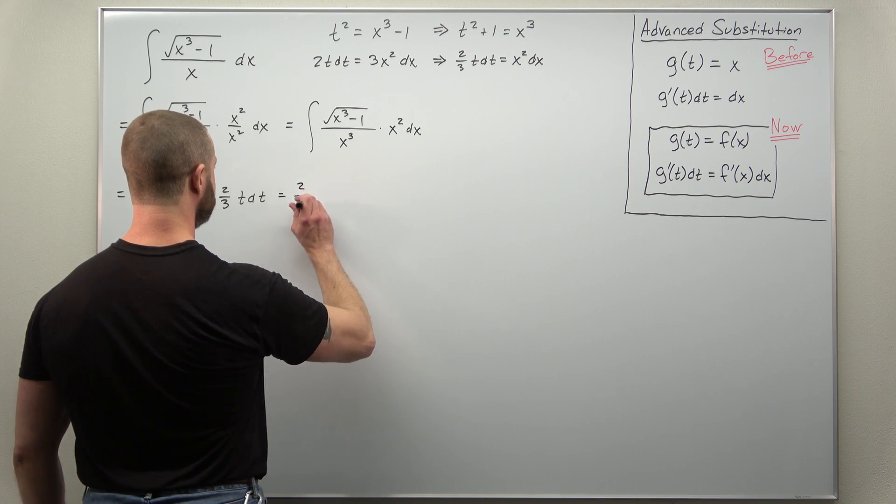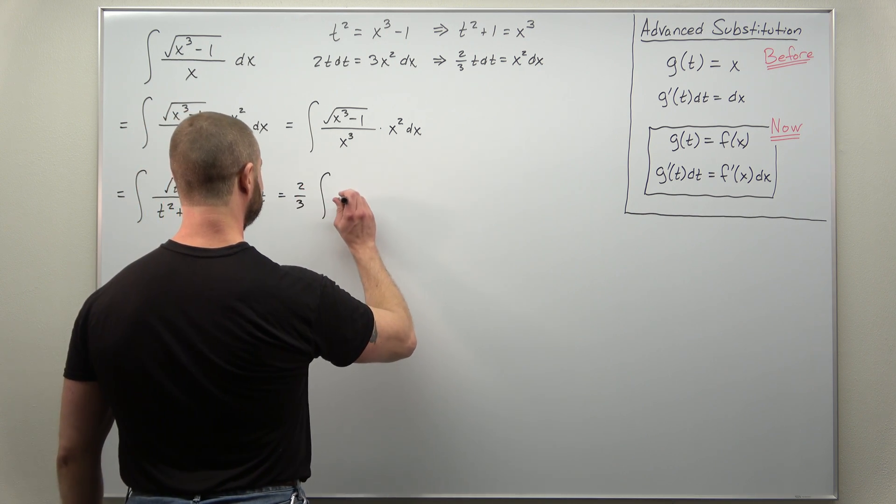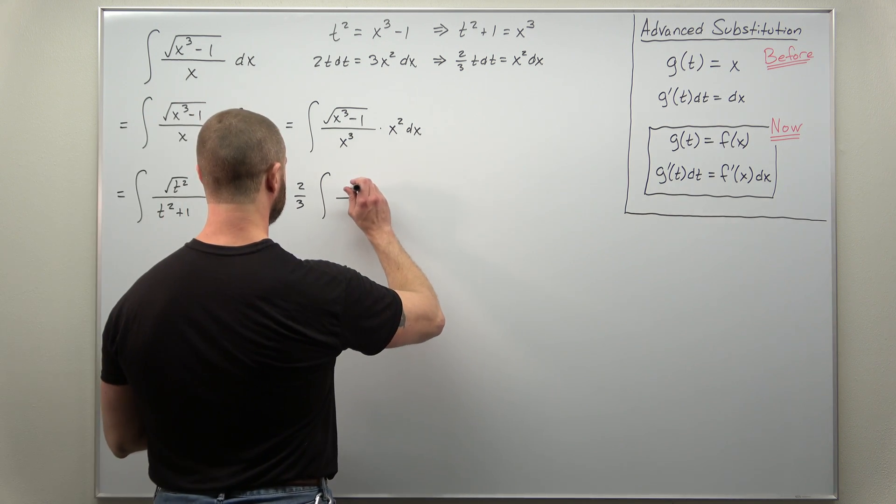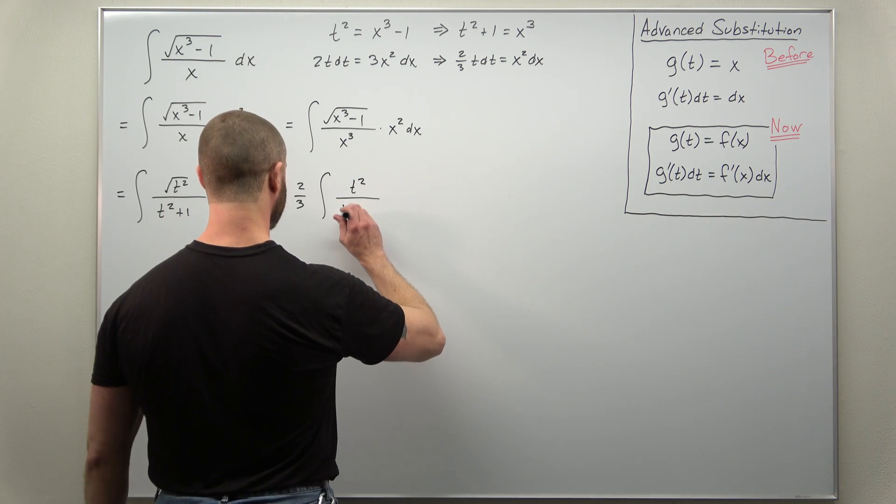We'll write this as two-thirds times the integral of t squared divided by t squared plus 1.